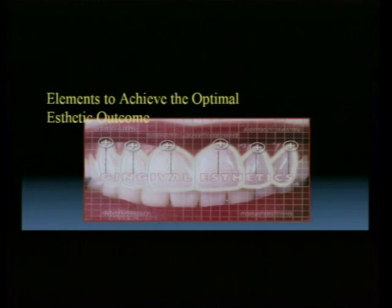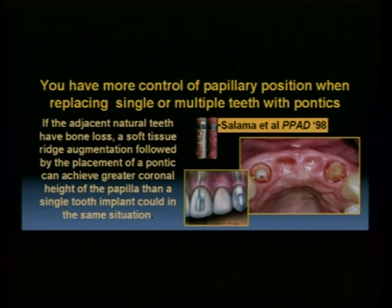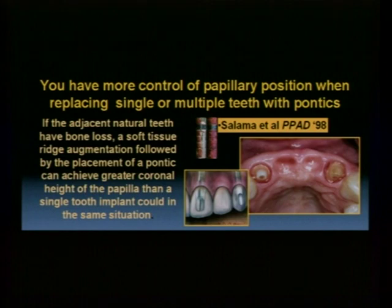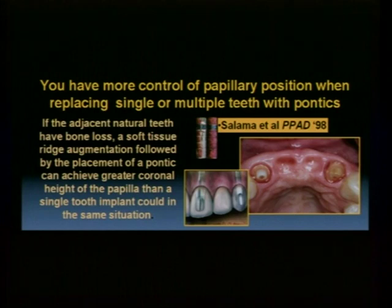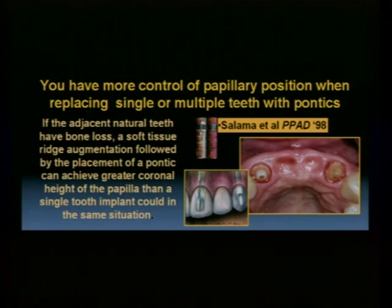Achieving optimal aesthetic outcomes requires a thorough discussion through diagnostic wax-up and proper laboratory support. The literature also shows that papillary form can often be better maintained with pontics versus dental implants. We can expect approximately 4.5 millimeters of soft tissue above bone between a tooth and implant or between a pontic and an implant, whereas Salama found that at a pontic site we can achieve up to 6.5 millimeters of tissue depth. Utilizing ovate ponics — between implants or natural teeth — can provide excellent soft tissue for optimal aesthetic outcomes.